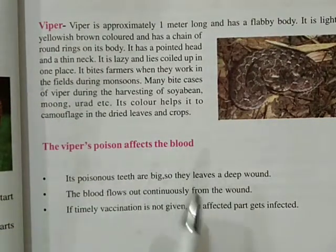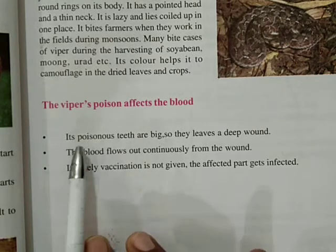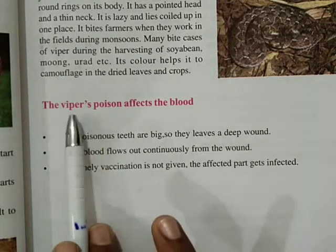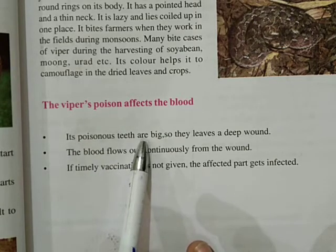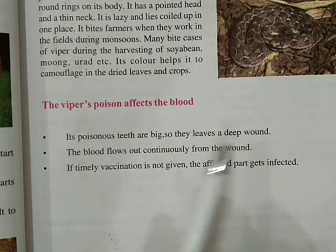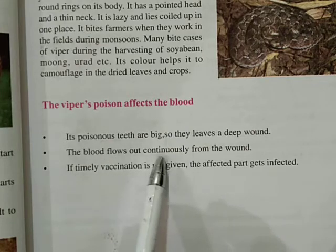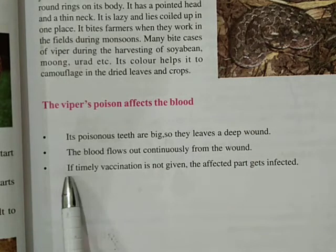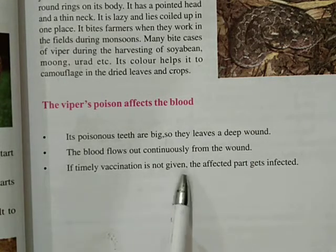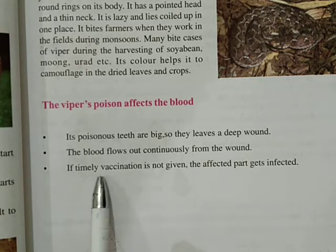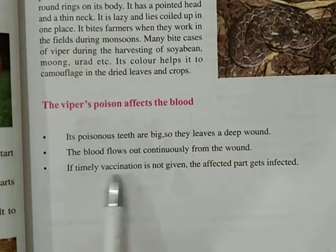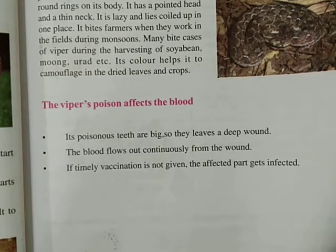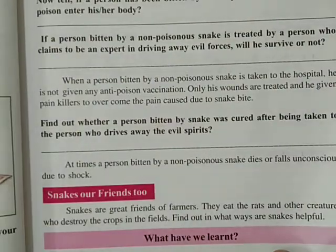The viper's poison affects the blood. Its poisonous teeth are big, so they leave a deep wound — viper ke teeth lambe aur bade hote hain, is wajah se lambe, gehre ghao karte hain. The blood flows out continuously from the wound — jahan ghao ban jaata hai, wahan se lagataar blood nikalta hai. If timely vaccination is not given, the affected parts get infected — yagar turant usko vaccination nahin milta hai to woh jo area hota hai, usme poora infection failna shuru ho jaata hai.